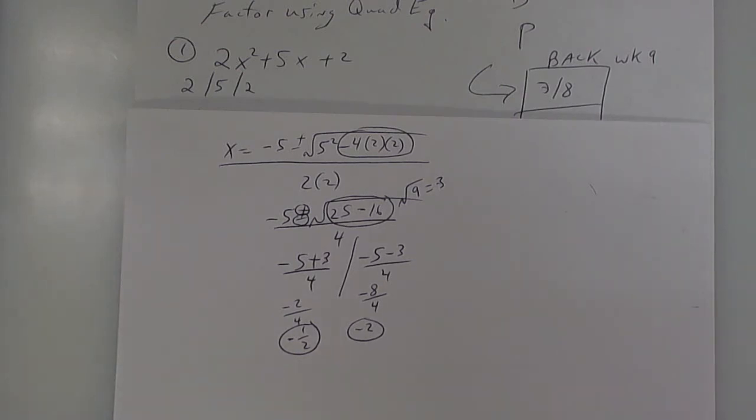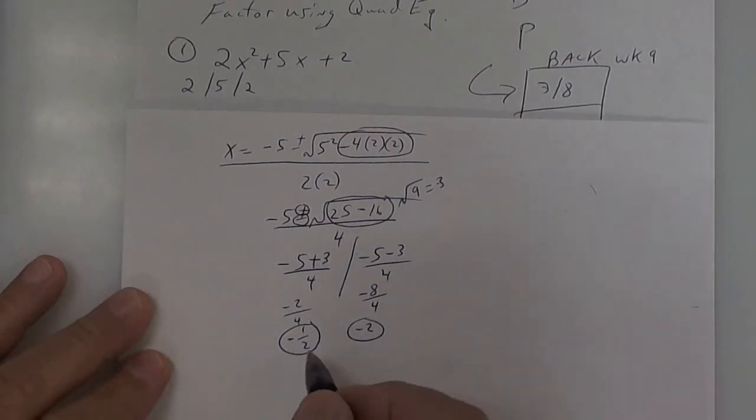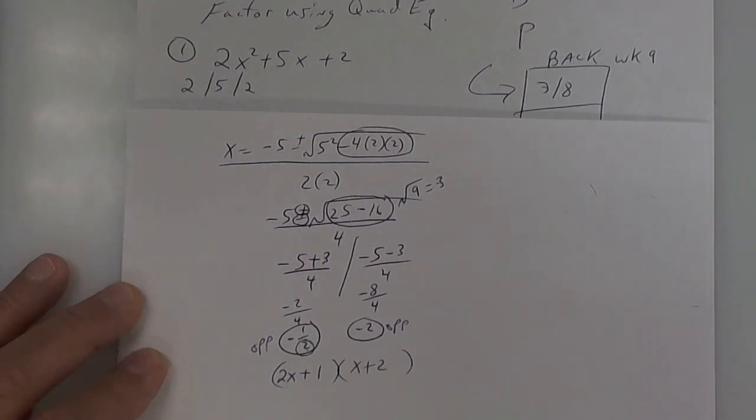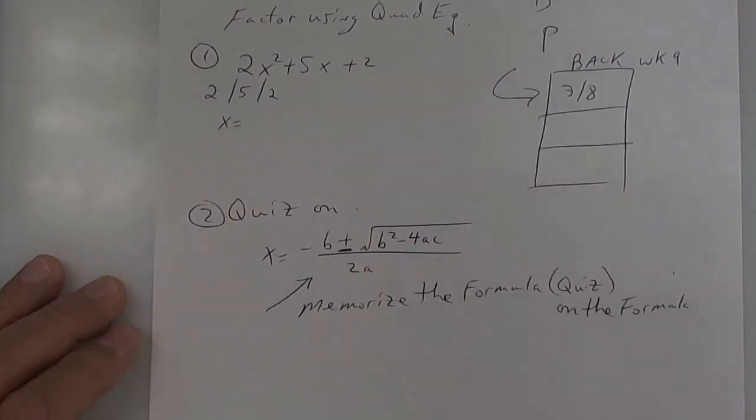Now, to write these as factors, what you're going to do on this one right here, you're going to use the bottom number to go with the x in the front. So this bottom number goes here, so it's going to be 2x, and then you do the opposite. The opposite is going to be a plus 1. And then here, you're going to do the opposite, so that's going to be x plus 2. And that should work. You can actually check this one by using foil. Put away your bell work.